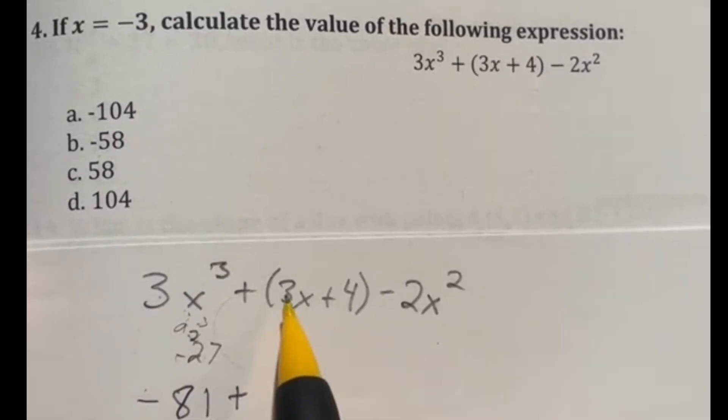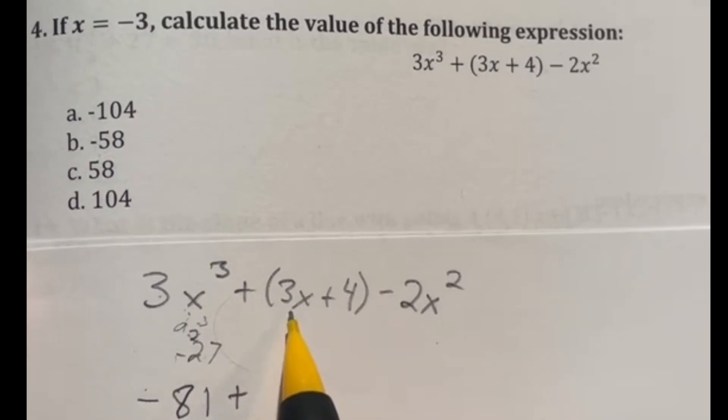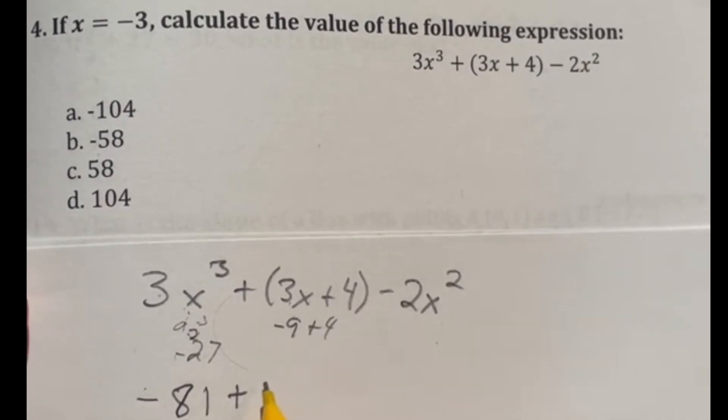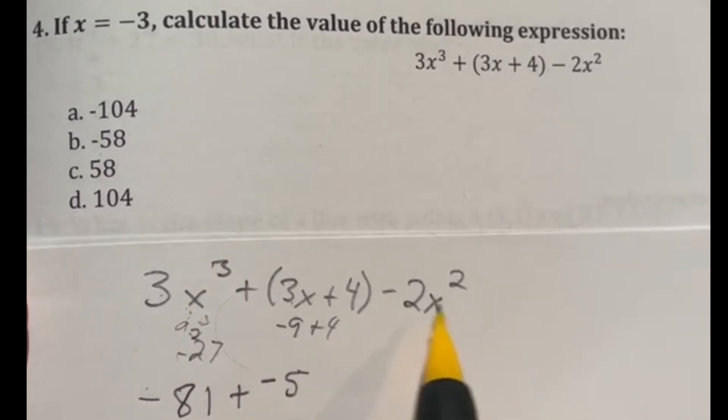Now we're going to add here. Now we're working on this term right here. So 3 times the -3 we're plugging in would give us a -9 plus 4. Well, -9 plus 4 is going to give me a -5.